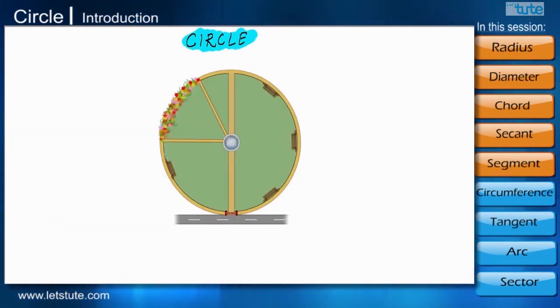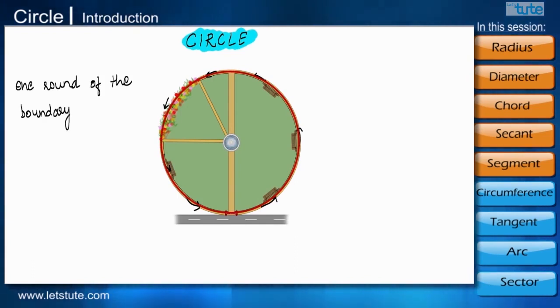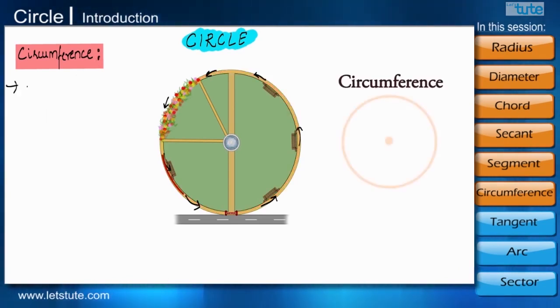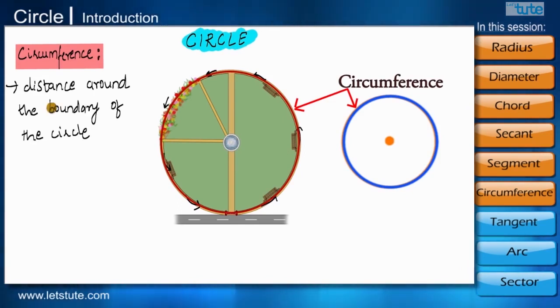Now just imagine if you are jogging around the boundary of the park and when you complete one round of this boundary, it is known as the circumference of the circular park in which you are jogging. Circumference is the distance around the boundary of a circle.